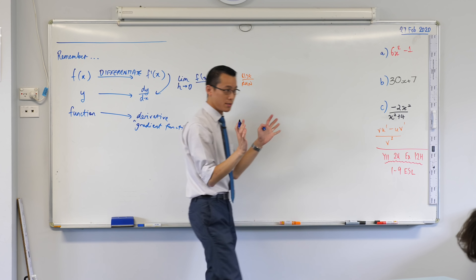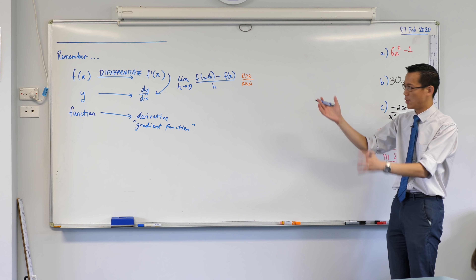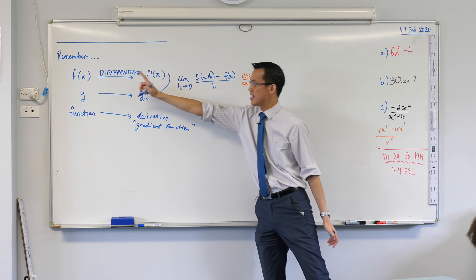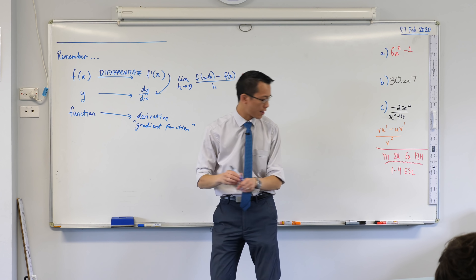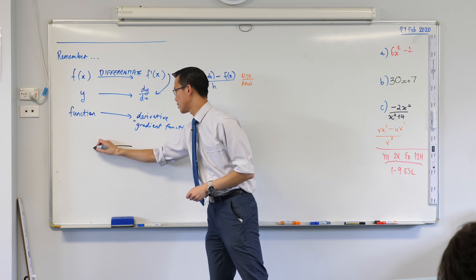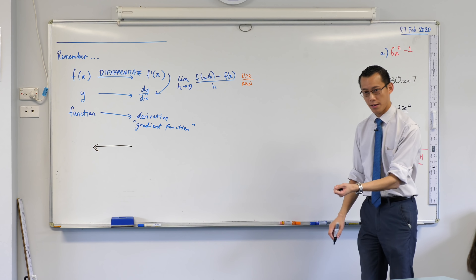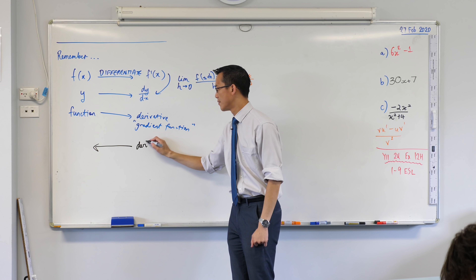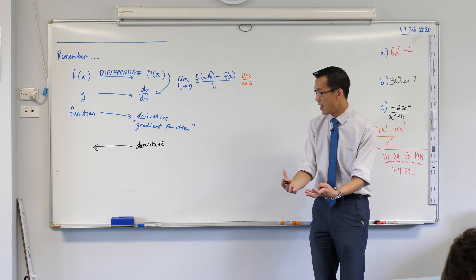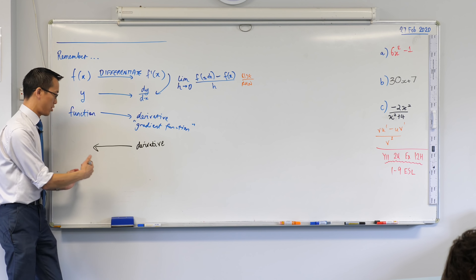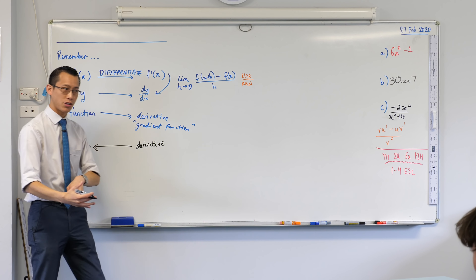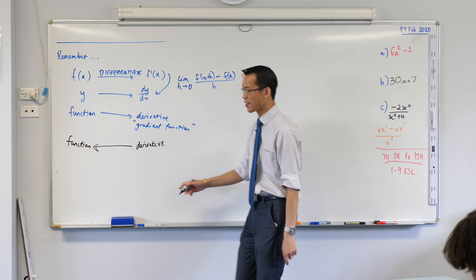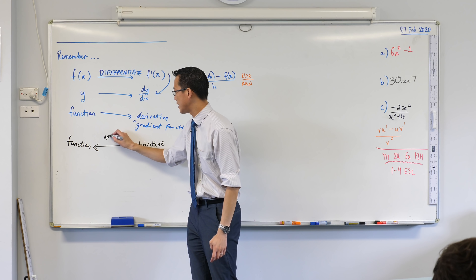What we're thinking about today is taking this process, differentiation, and viewing it from the opposite direction. What if, instead of starting with a function and going through this process, we started from the other side? What if I gave you a derivative and said: what was the function that it came from? This is the opposite of differentiation, so one of the names for this process — very unoriginal, but probably the most relevant — is anti-differentiation.